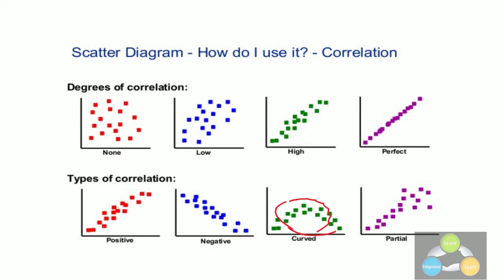Third, curved. It is a combination of positive and negative correlation. Fourth, partial. There is a relation between variables up to a certain range and thereafter some random behavior.